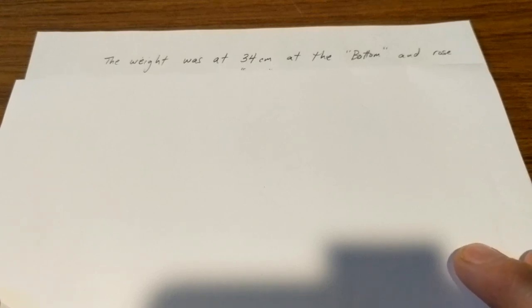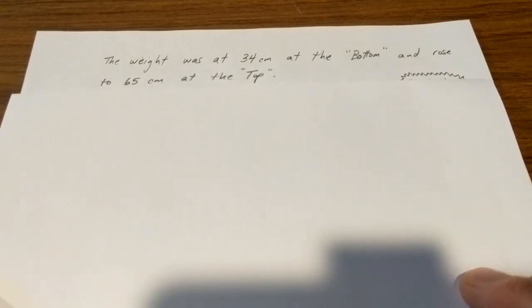Hopefully you were able to see, roughly at least, what height the swing weight was at before and after he had jumped onto it. In case you didn't, and hopefully you agree with these numbers, but I looked at it in slow-mo, and I thought that the weight was at about 34 centimeters when it was at the bottom of its swing, and it rose up to a height of 65 centimeters or so at the top. We're going to use those numbers as our heights when we do our energy analysis.